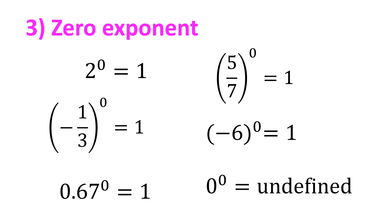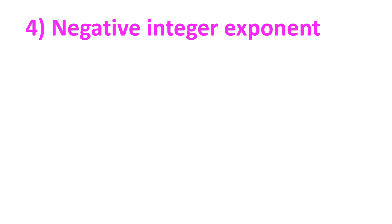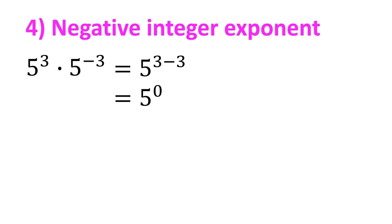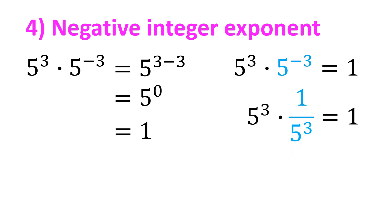Using the definition of zero exponent, we can now define the meaning of negative exponent. Let's say we have 5 cubed times 5 raised to negative 3. By the product of powers property, this equals 5 raised to 3 minus 3, which is 5 raised to 0, and we know that equals 1. For this equation to be true, 5 raised to negative 3 must be the reciprocal of 5 cubed, which is 1 over 5 cubed, because any non-zero number multiplied by its reciprocal equals 1. So therefore, 5 raised to negative 3 must equal 1 over 5 cubed.